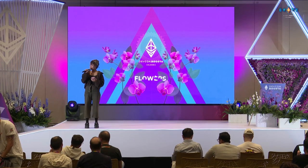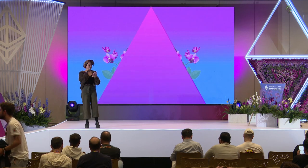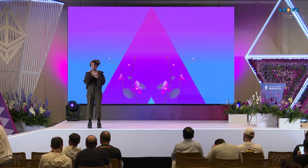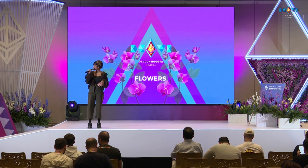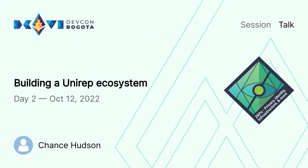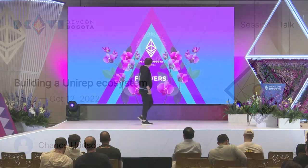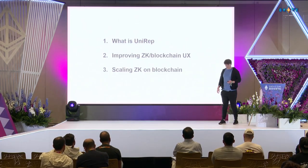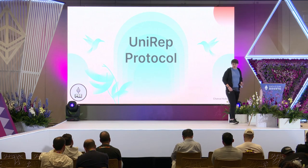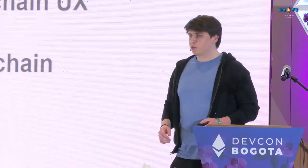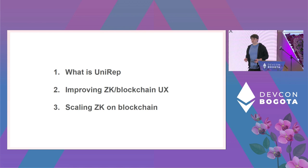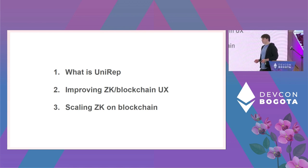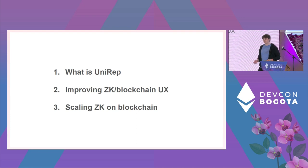Our next speaker is Chance Hudson, talking about how to build an identity ecosystem on UniRep, which is an anonymous reputation system. I'm excited to talk about UniRep. Here's a quick roadmap: first, a semi-technical overview of the UniRep protocol; then, improving the user experience of ZK and blockchain applications; and finally, how we can scale ZK on the blockchain and where we're at with capacity.